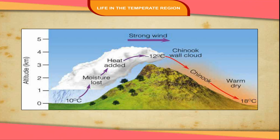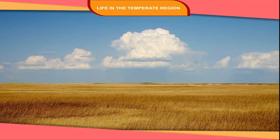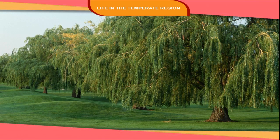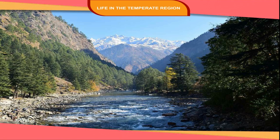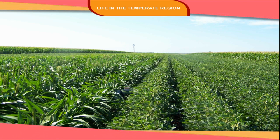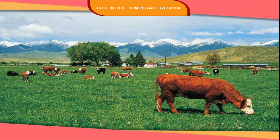Vegetation and Wildlife: Although most of the region is treeless, in areas where water is available, trees such as poplars, alders and willows are found on mountain slopes and river valleys. Tall grasses are found in the more humid prairies and short grasses are found in the drier western parts. Places that receive rainfall of over 50 cm are suitable for farming as the soil is fertile.